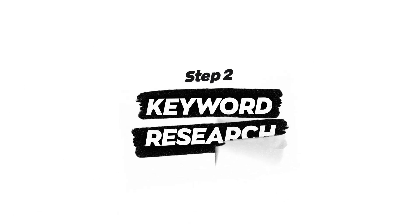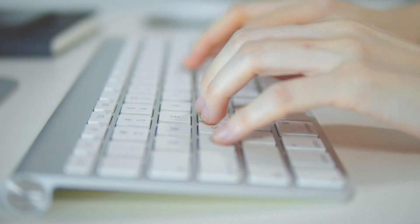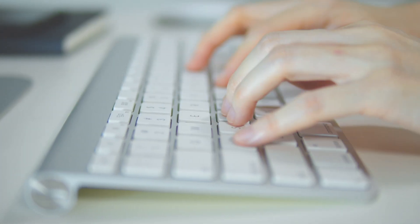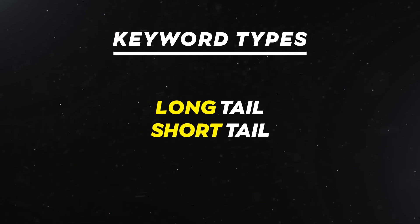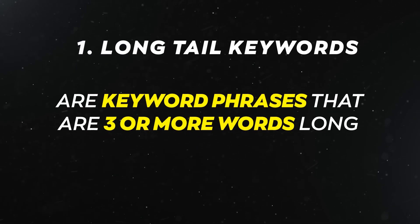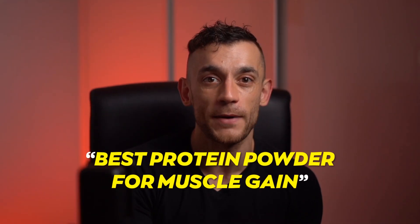Step number two is keyword research. Keywords are the words and phrases that people type into search engines to find what they're looking for. Keyword research is a big part of learning SEO, so it's important you get familiar with it — finding the right keywords can make or break your business. There are two types of keywords: long-tail and short-tail. Long-tail keywords are keyword phrases that are three or more words long. These get less search traffic, but they usually have a higher conversion rate because they're more specific. An example would be 'best protein powder for muscle gain.'